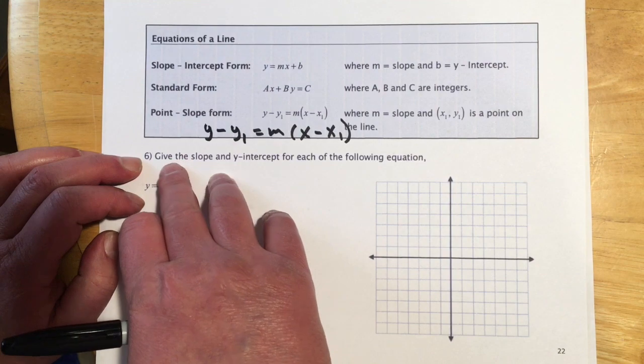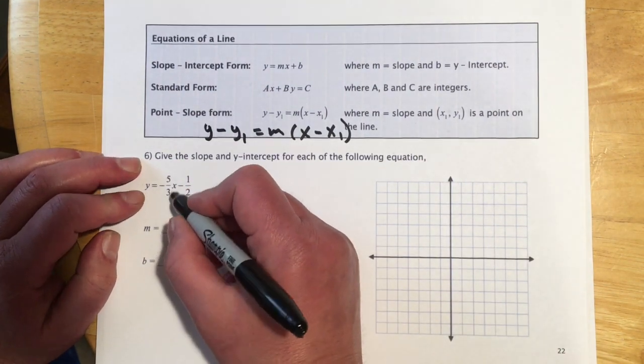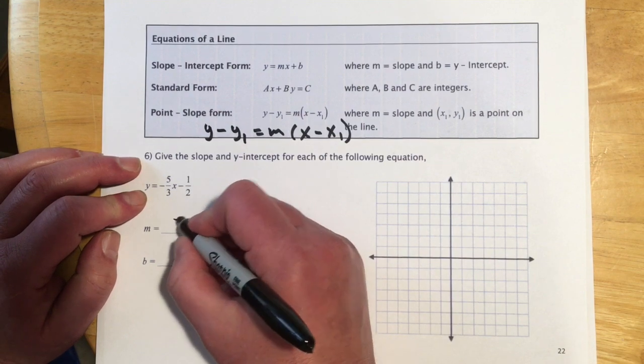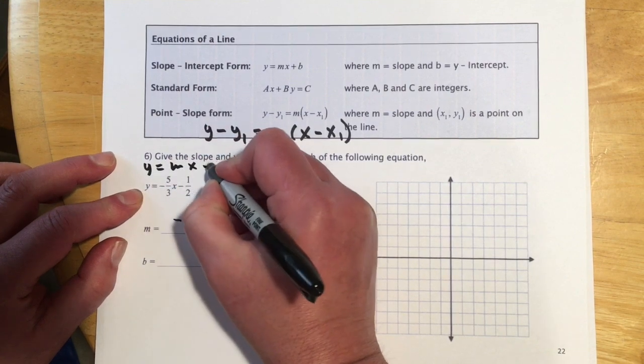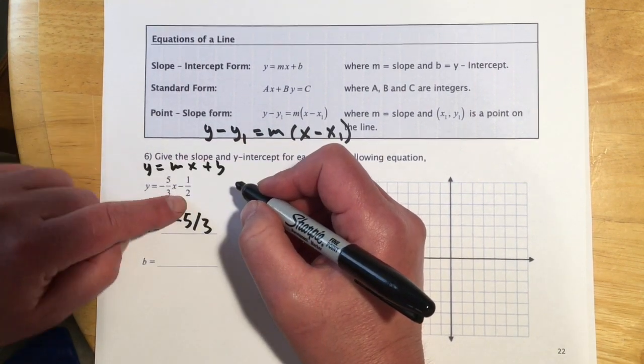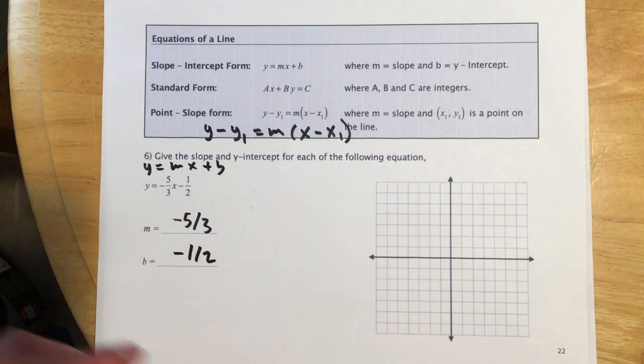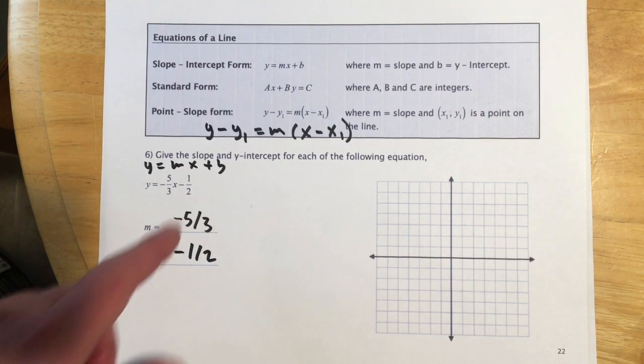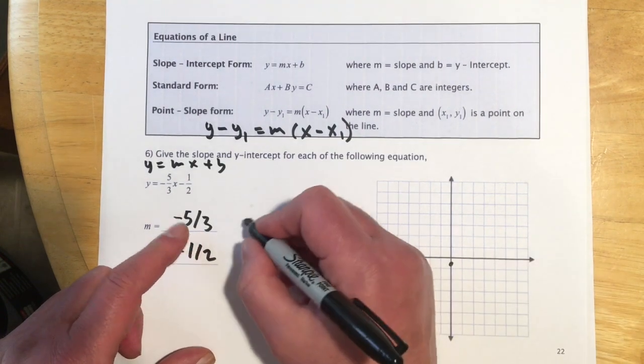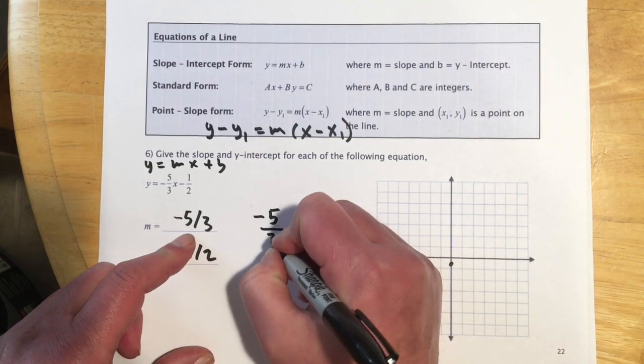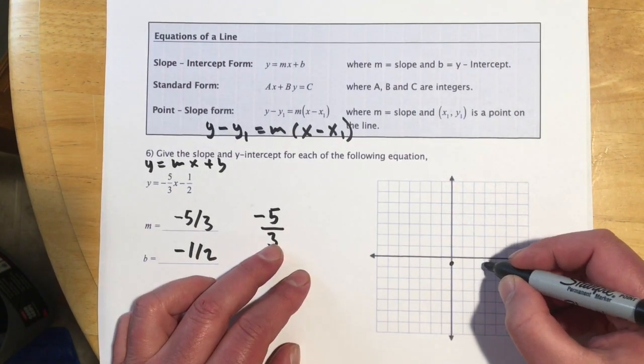For this first example, we'll give the slope and the y-intercept for each of the following equations. Okay, so here the slope would be negative 5 thirds, because this is in y equals mx plus b. So the slope is what's in front, and then b, the y-intercept, is on the end. So that would be negative 1 half. And then to graph that, I would guess it will let you start at negative 1 half. And then we're just going to go, so negative 5 over 3. So that means I want to go right 3 boxes, and then down 5.